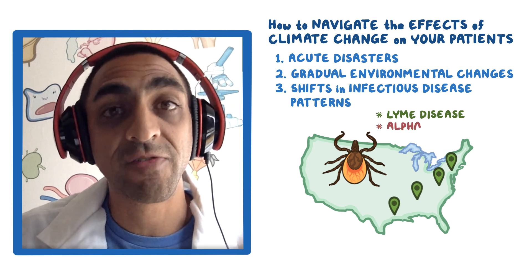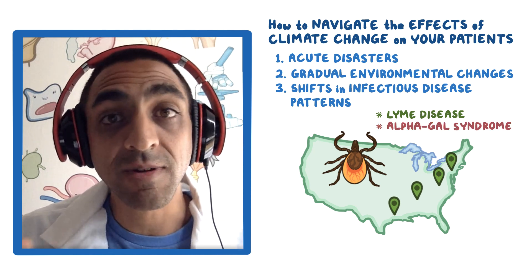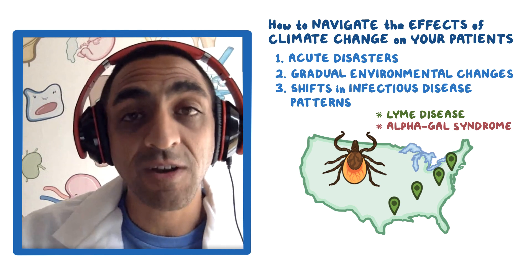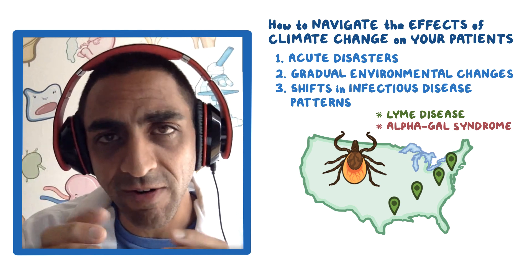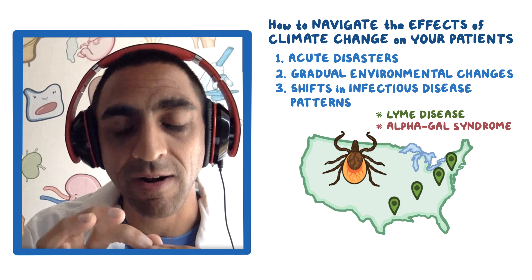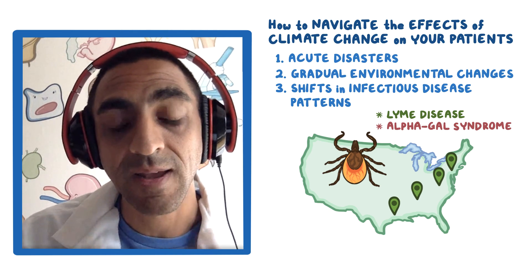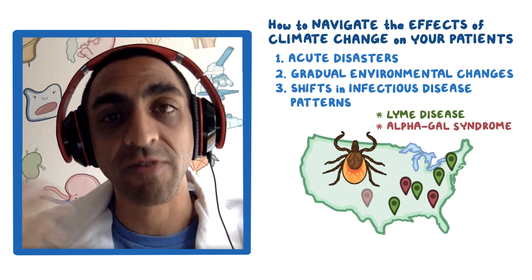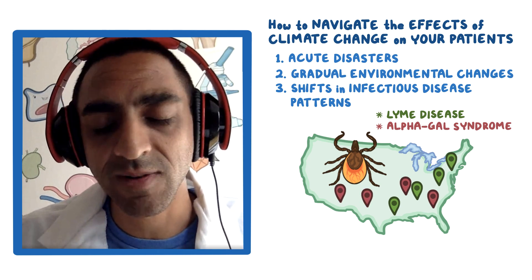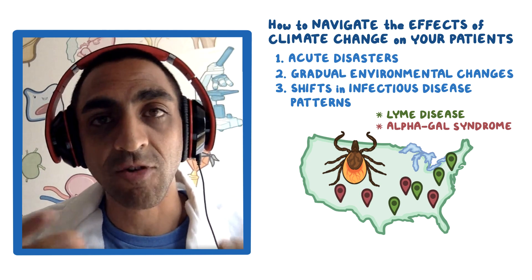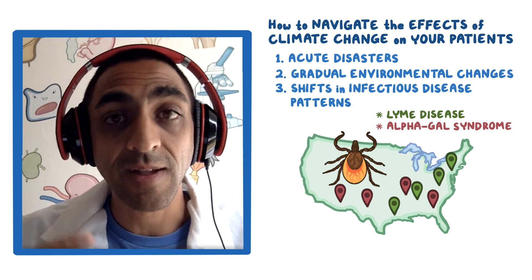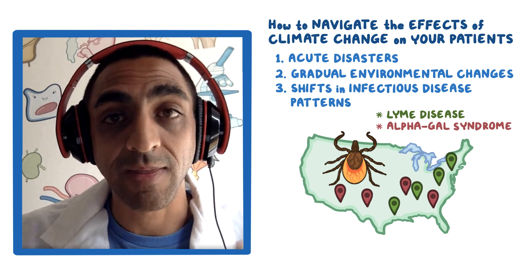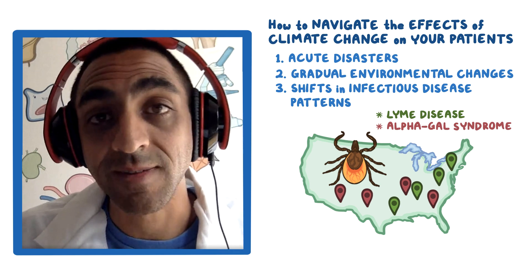Another example is alpha-gal. Alpha-gal is a newer disease. For certain physicians in the U.S., it wasn't known about except in very remote areas where the transmitting tick was found. Now the tick is migrating and you're seeing alpha-gal disease in other areas as well. The CDC does a good job of trying to keep up with this, but unless you keep up with your public health department and the CDC, you may not know these things are happening.